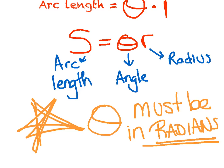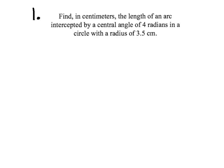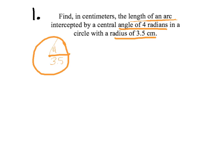Let's give a few examples. Remember, theta has to be in radians. Example 1: find, in centimeters, the length of an arc intercepted by a central angle of 4 radians in a circle with a radius of 3.5. Draw a sketch — we have a circle with a radius of 3.5, a central angle of 4 radians, and we're finding the arc length s.